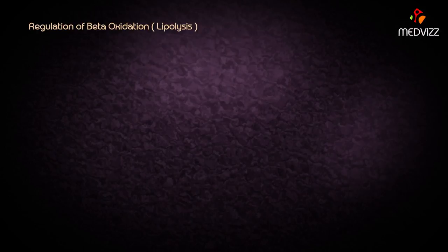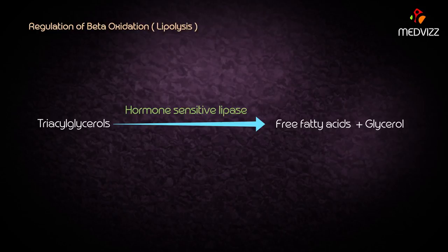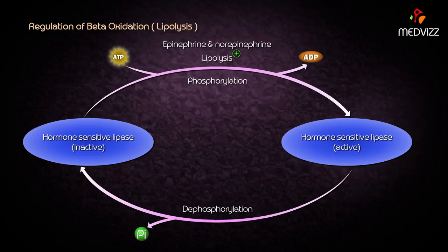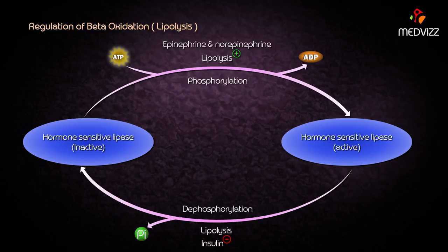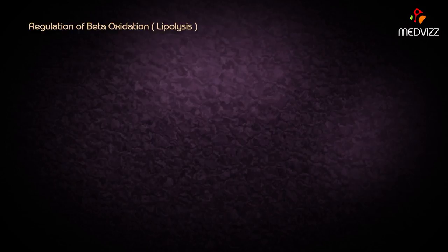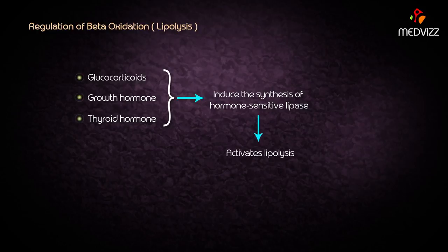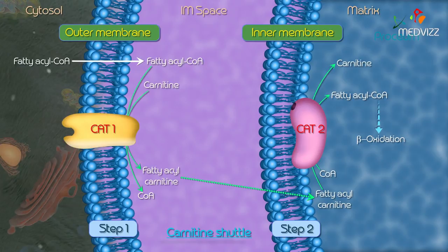Regarding regulation of beta oxidation, lipolysis hormone sensitive lipase is the only point in fatty acid oxidation regulated by hormones. Hormones like epinephrine and norepinephrine activate lipolysis by converting hormone sensitive lipase to an active phosphorylated form. Insulin, the predominant hormone in the well-fed state, inhibits lipolysis by converting hormone sensitive lipase to an inactive dephosphorylated form.